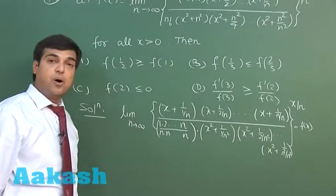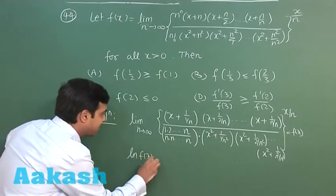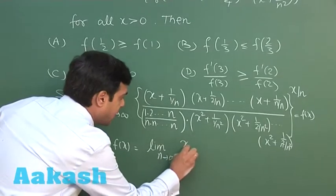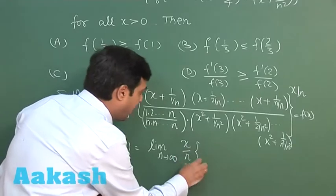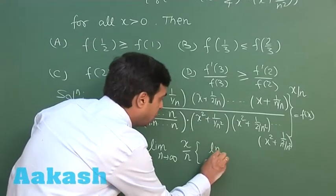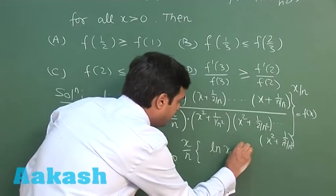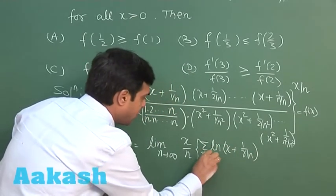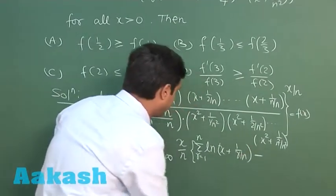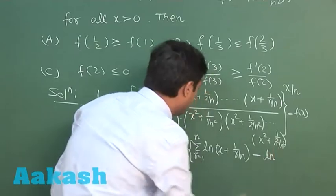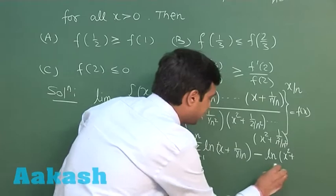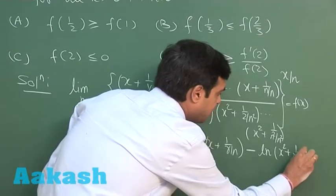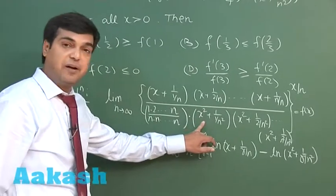Taking log on each side, we write log f(x) equals limit n→∞ of (x/n) times the sum over r from 1 to n of: log(x + r/n) minus log(x² + (r/n)²) minus log(r/n).